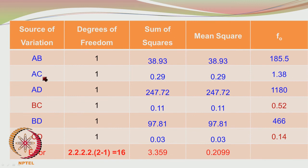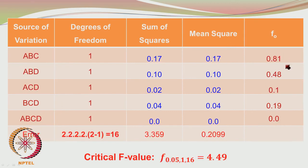Ternary interactions are also there, and you can find that all the F values are pretty small — the critical F value is 4.49. So all ternary interactions and the quaternary interaction vanish.